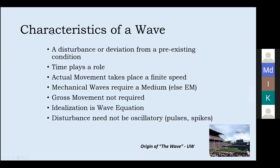Another leading place is University of Texas at Austin. This is from a professor there, David Blackstock, who has a graduate-level book about waves with some good thoughts. A wave has characteristics: it's a deviation or disturbance from a pre-existing condition; time plays a role; actual movement takes place at a finite speed; mechanical waves require a medium, though electromagnetic waves can go through a vacuum. Gross movement is not required, and the idealization is a wave equation. In acoustics there are nonlinear wave equations and more complicated situations - it isn't always just a linear wave equation.